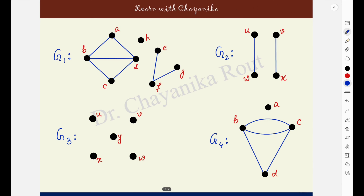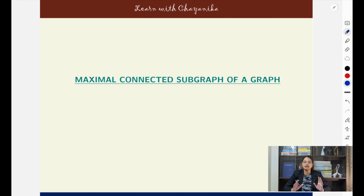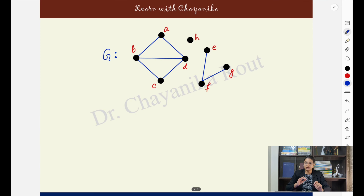Here we have examples of disconnected graphs. In g1, there is no path between vertices b and h, or c and g, or a and f, or d and h — pick any one pair and the graph is disconnected. In g2 there is no path between u and x. In g3 there is no path between any pair of vertices. In g4 there is no path between d and a. Whenever we deal with disconnected graphs, the term component comes into picture, also termed as maximal connected subgraph.